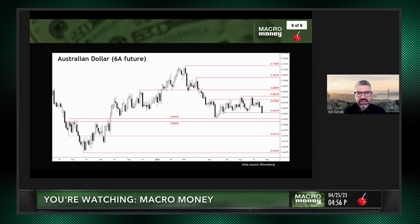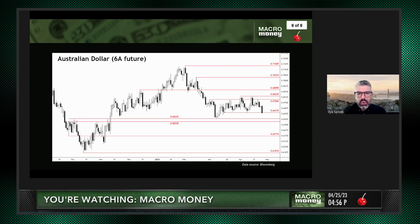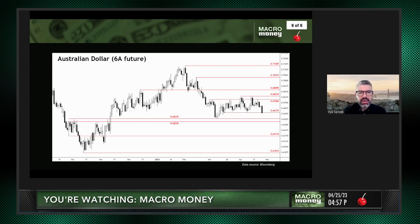So if the line in the sand is being tested here at 66.37, under that is the support zone from 65.56 to about 65.50 or so. If you can break that, the next level of support is seemingly 63.72, and underneath that 61.81 — the major low from last year.